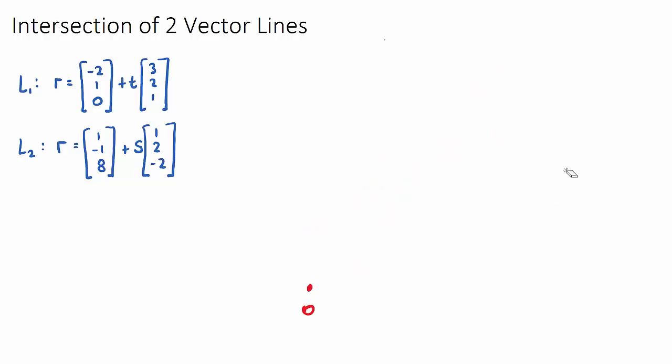So when they intersect, they're going to be equal to each other, those two lines. When they're equal to each other, the x values of the lines, the y values, and the z values will be equal to each other.